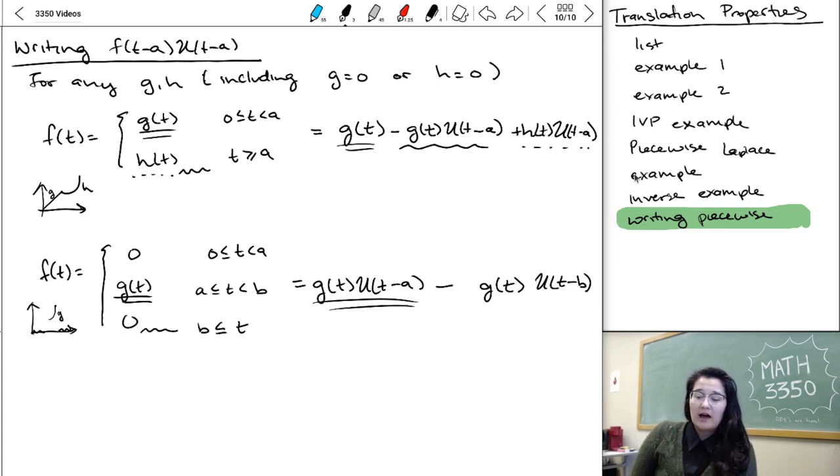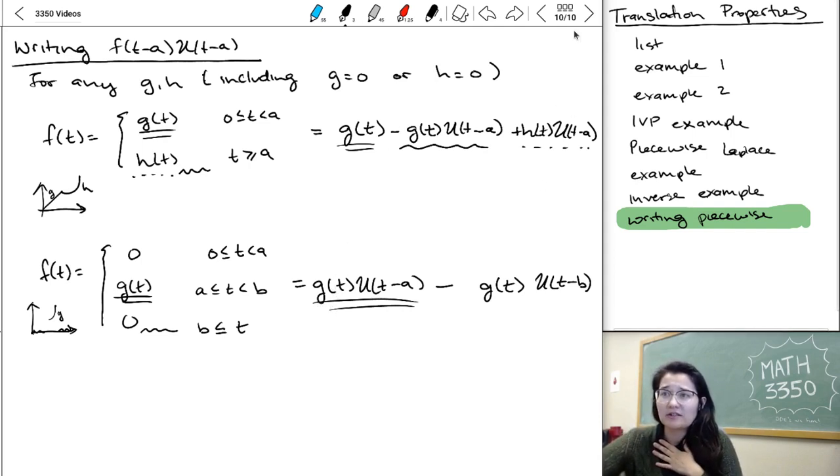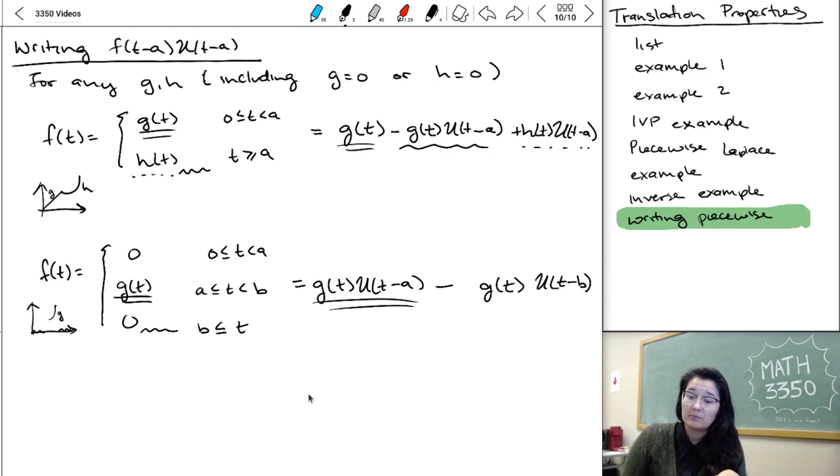Just be careful. I've written it in this form where, sorry, G and H are in terms of T, because that's the way that you'll represent it when you first write it down to match the function that you're given. But before you can take Laplace, you do have to do that funky manipulation to turn it into G of T minus A or H of T minus A. But that's all there is to this section. So hopefully you get some practice writing those piecewise functions and they start to get a bit more familiar. And with that, I will see you in the next set of videos.